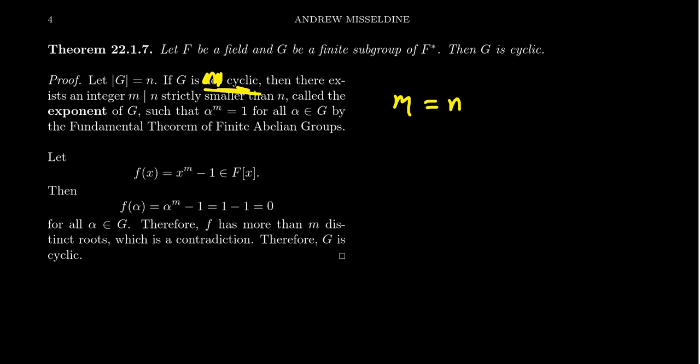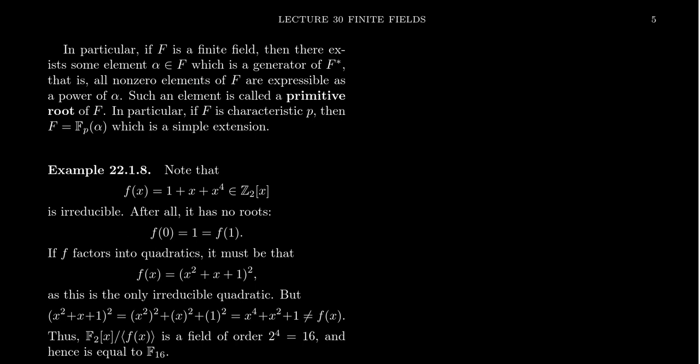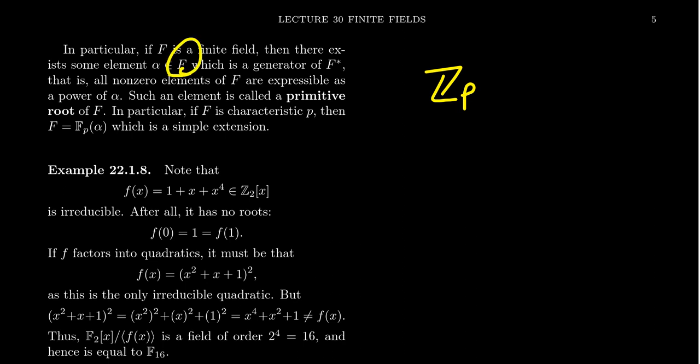For a finite field, the unit group is necessarily cyclic. Since F* is cyclic as a multiplicative group, it has a generator — in fact, multiple generators. That is, there exists some non-zero element alpha such that every non-zero element of F is a power of alpha. Such an element is called a primitive root. In number theory, this same concept applies to Z_p where p is prime — elementary number theory with primitive roots is just a special case of what we're discussing. Z_p is a finite field, and this is true for every finite field.